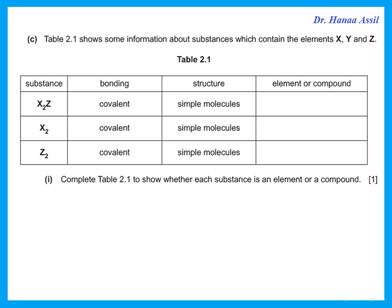Table 2-1 shows some information about substances containing elements X, Y, and Z. Complete to show whether each one is an element or a compound. Elements have all atoms the same; compounds have different elements chemically combined together. X2Z has two different elements, so that's a compound. X2 has just one type of element, so that's an element. Z has only one type of atom, so that is an element.